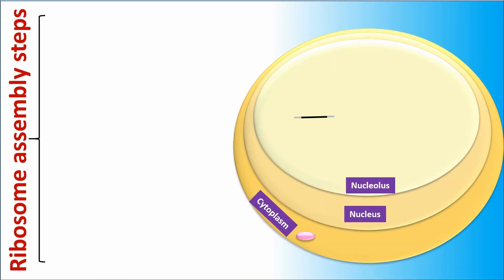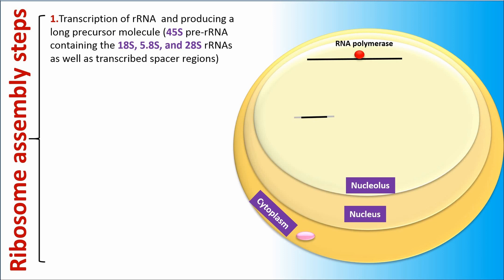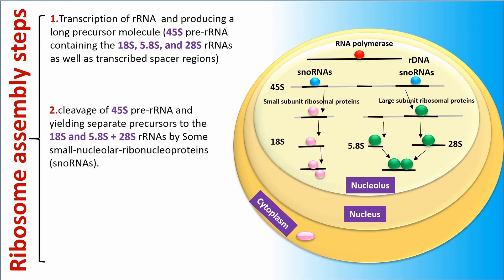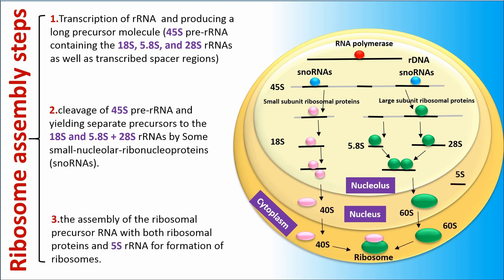Ribosome assembly steps. Step one: transcription of rRNA, producing a long precursor molecule or 45S pre-RNA containing the 18S, 5.8S, and 28S rRNAs as well as transcribed spacer regions. Step two: cleavage of 45S pre-RNA, yielding separate precursors to the 18S and 5.8S plus 28S rRNAs by some small nuclear ribonucleoproteins or snRNAs.